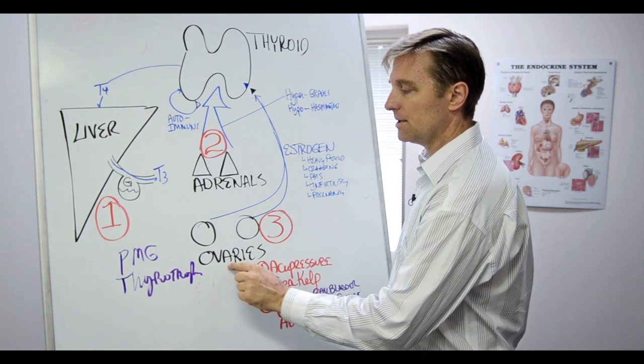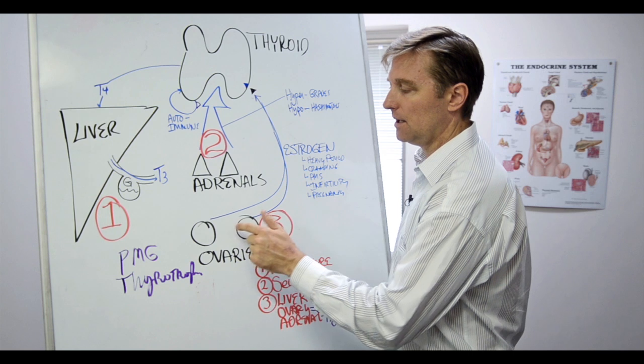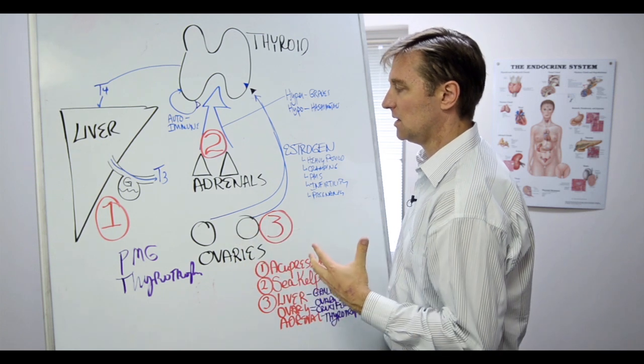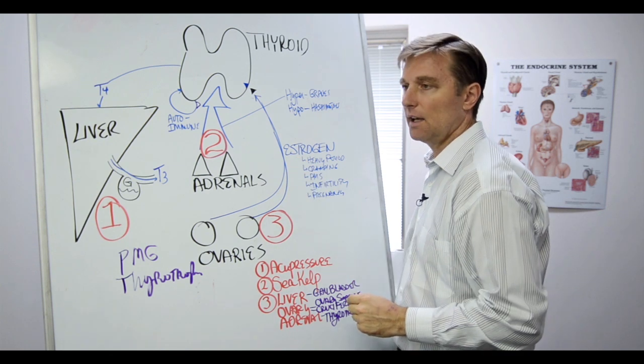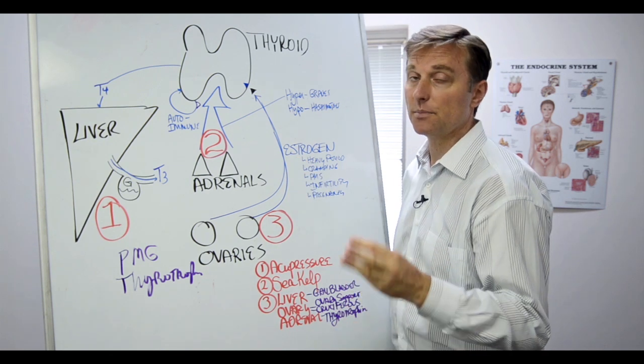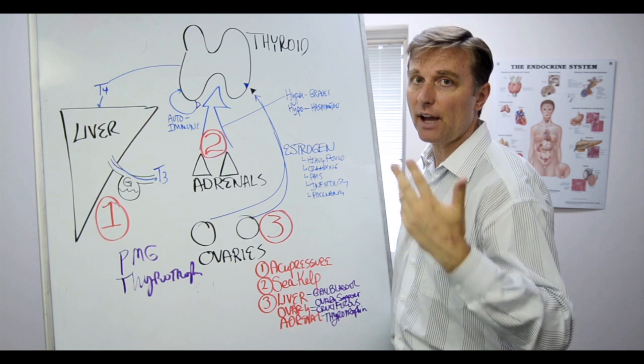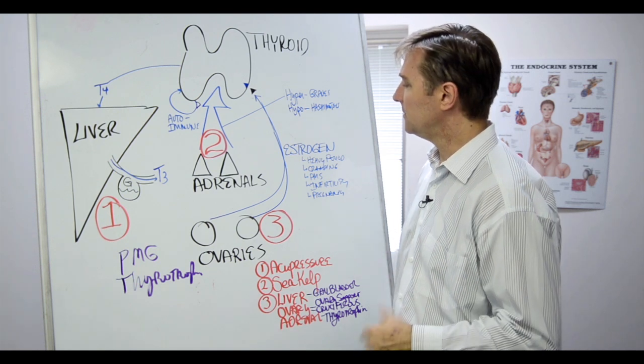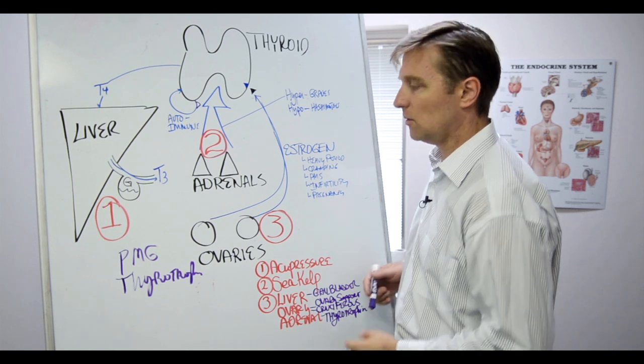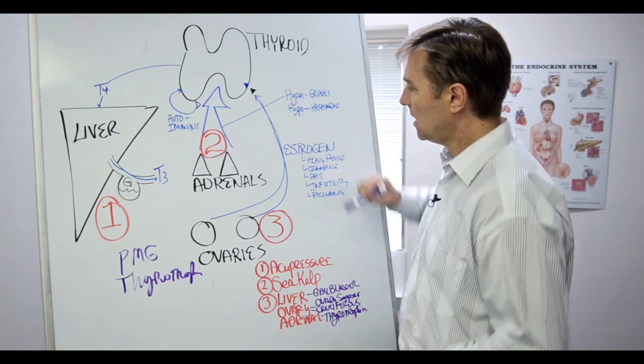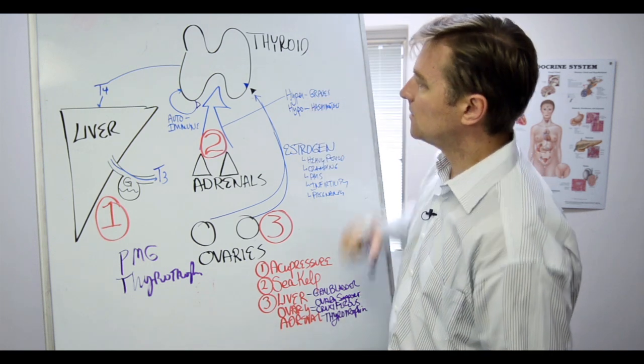And three is the overactive ovary. The ovaries produce a lot of estrogen. If the person is estrogen dominant, they're pumping out too much estrogen. And you can tell that by their periods - the periods are crazy heavy, bleeding, cramping, irregular, infertility, PMS, or they had a pregnancy, or they have a fibroid. All that extra estrogen can act